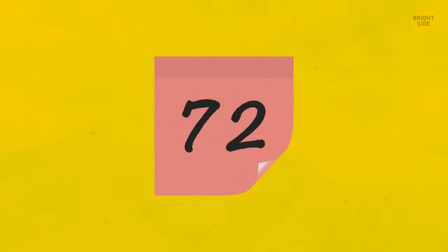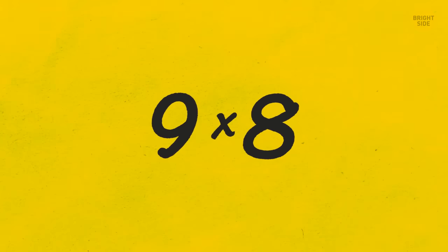How can you turn 98 into 72 by using just one letter? Add the letter x between 9 and 8. You'll get 9 times 8 equals 72.